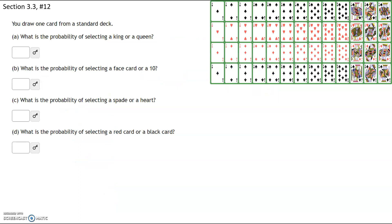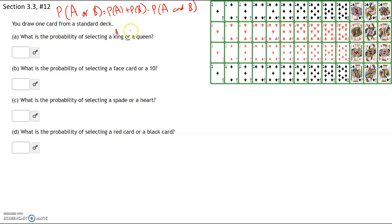You draw one card from a standard deck — since you're choosing one card you only have one probability. What is the probability of selecting a king or a queen? The word 'or' reminds us to use the addition formula: P(A or B) = P(A) + P(B) − P(A and B). Here event A is choosing a king and event B is choosing a queen. We need to subtract off the probability of choosing a card that's both a king and a queen.